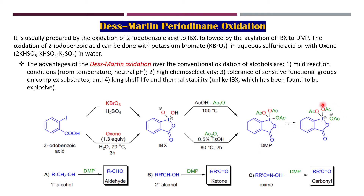DMP lies in equilibrium with this particular structure. The advantages of using DMP over conventional oxidizing reagents for alcohols are: it is a mild reagent, meaning you can use it at room temperature and neutral pH. There is very high chemoselectivity, high tolerance for sensitive functional groups or complex substrates, and long shelf life and thermal stability — which we do not see with IBX, which has been found to be somewhat explosive.